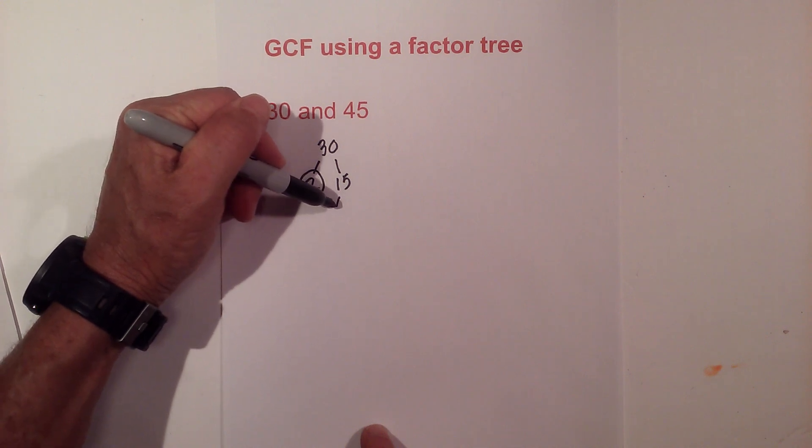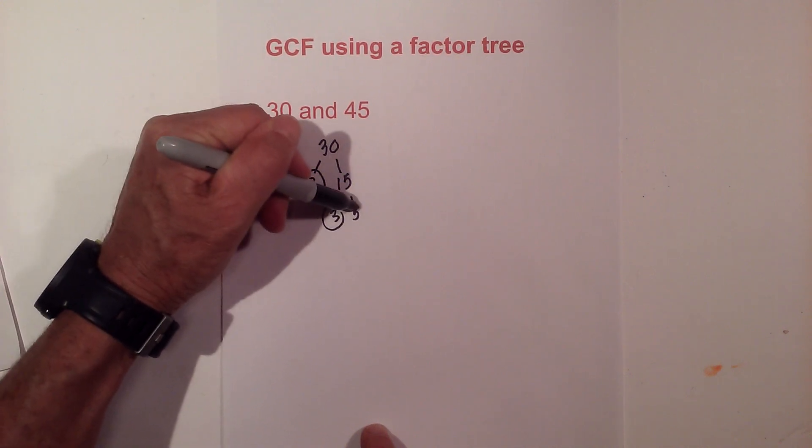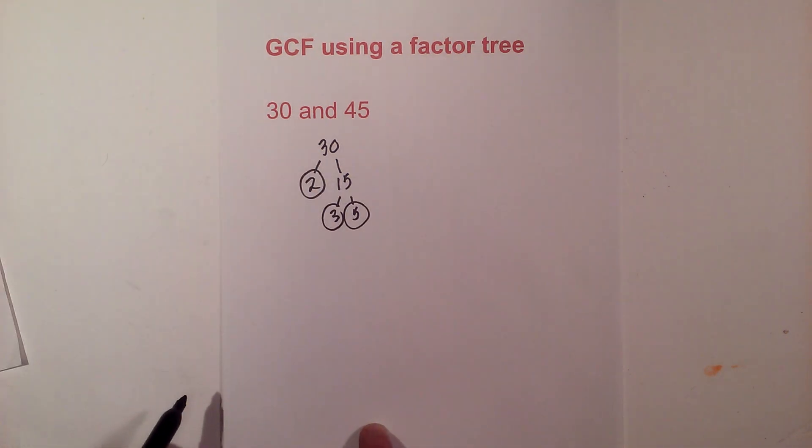Now let's go with 3 times 5 equals 15. I'll circle both of them because they are prime, so now I'm down to just prime numbers.